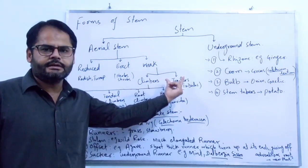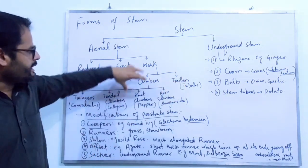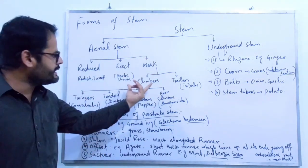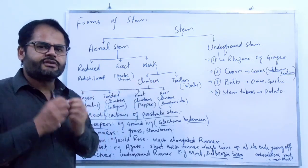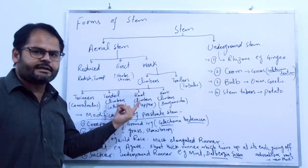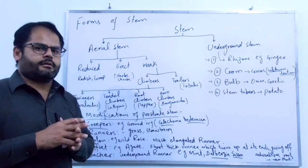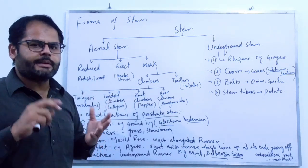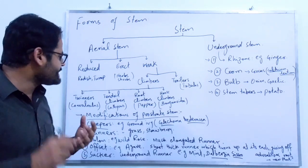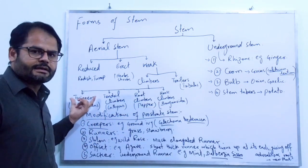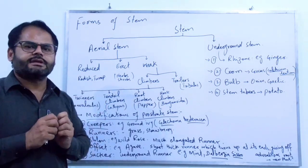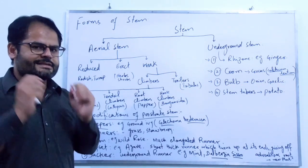Climbers are very diverse and are divided into four main categories. These categories are classified on the basis of the presence of certain structures used for climbing. The first category is called stem twiners, where the stem itself sticks to a certain surface and twines around that object.